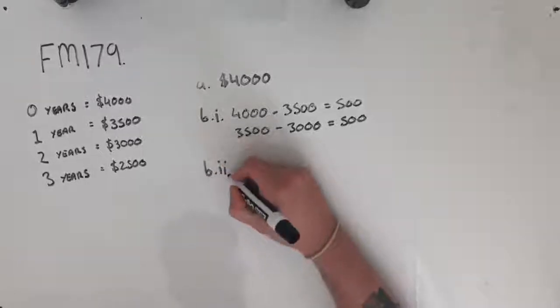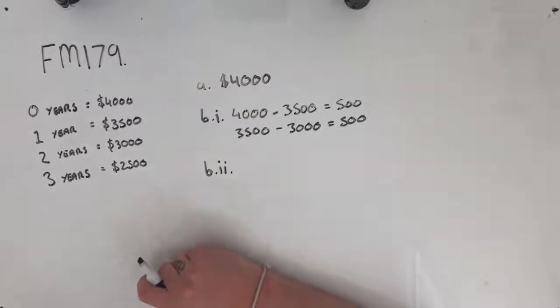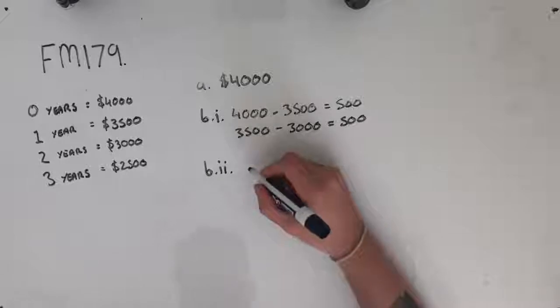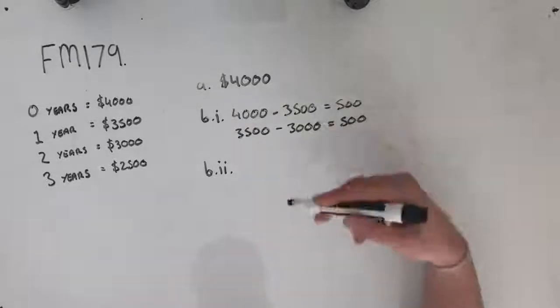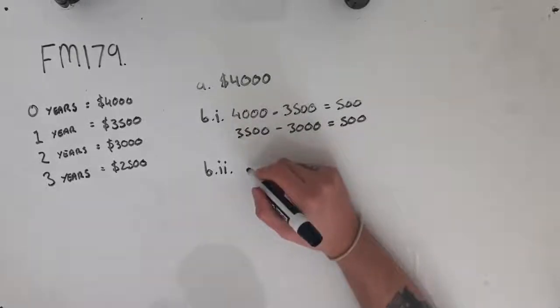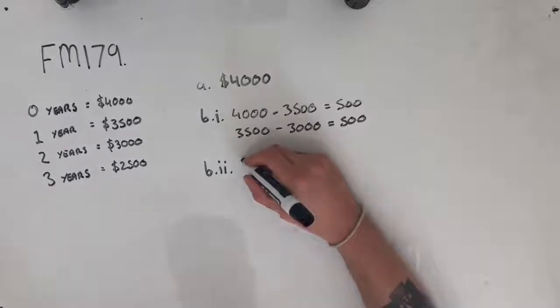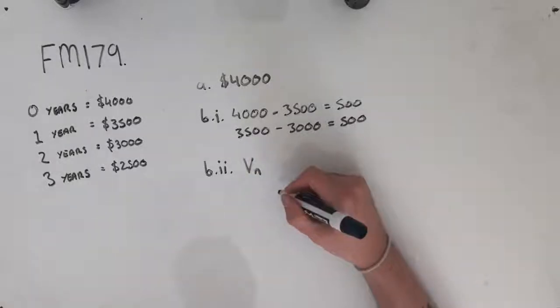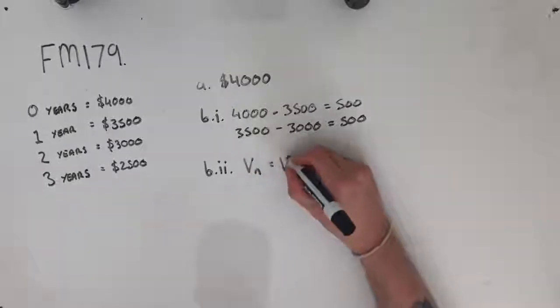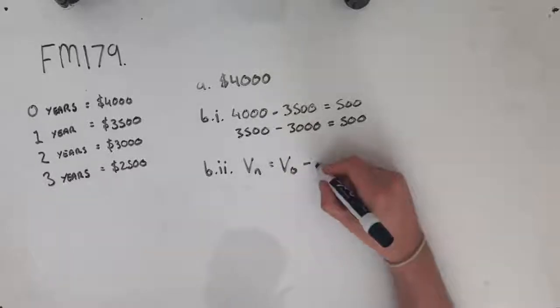Question B.ii. This question says, assume that the chainsaw's value continues to depreciate by $500 each year. Determine its value six years after it was purchased. So in order to do this, I'm going to create an nth rule, because it'll take a few goes of recursion to do this, and nth rules are usually a little bit faster. So we know that the baseline for this is going to be VN equals V0 minus nD.